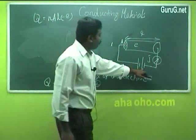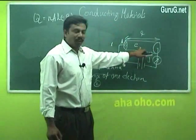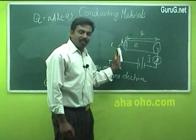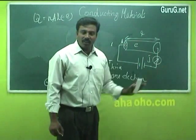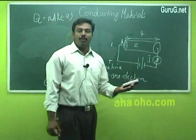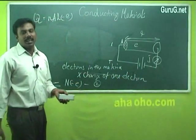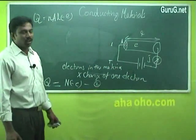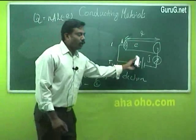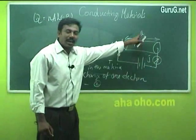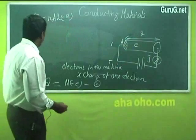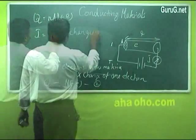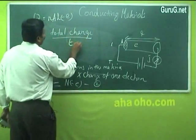When a voltage is applied to the specimen, all the free electrons acquire a drift velocity and move towards the positive direction — that is, opposite to the direction of the applied electric field. This drift velocity produces a current inside the specimen. Current i is equal to the total charge in the specimen divided by the time taken.